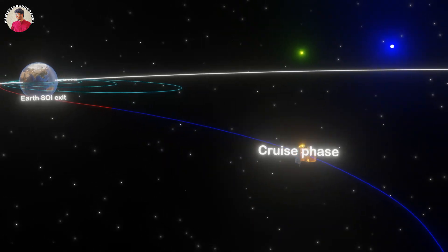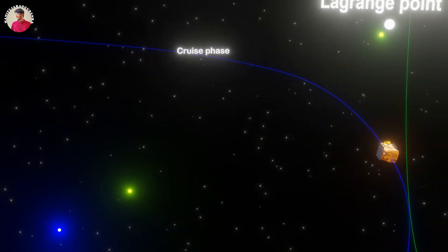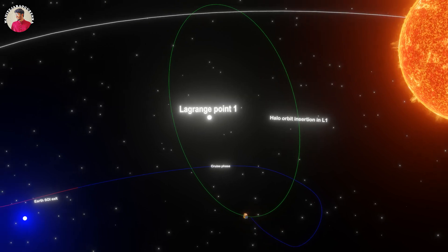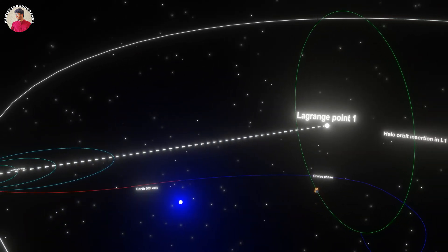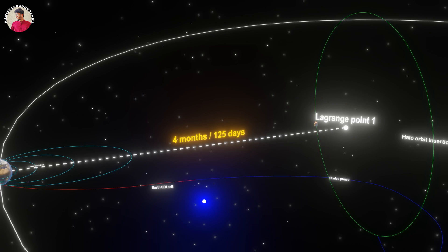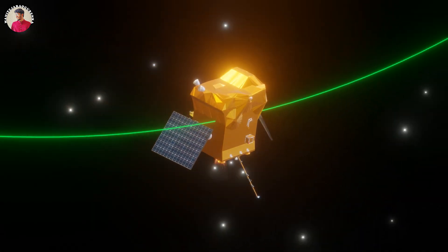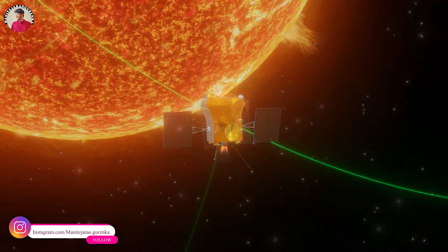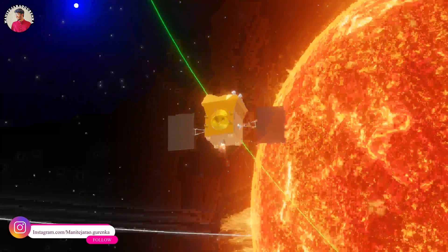And subsequently, the spacecraft will be injected into a large halo orbit around Lagrange Point 1. The total travel time from launch to L1 would take about four months for Aditya L1. This is how Aditya L1 satellite gets deployed in its orbit, and Aditya L1 is expected to have a lifespan of ten years.